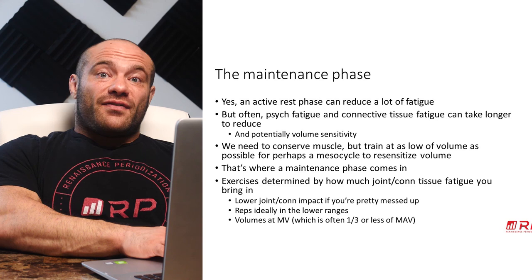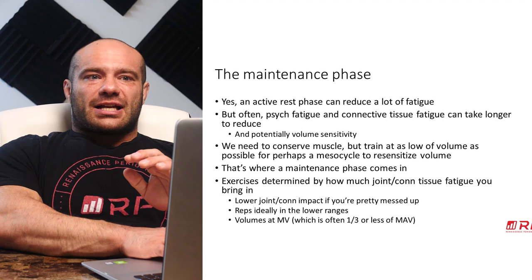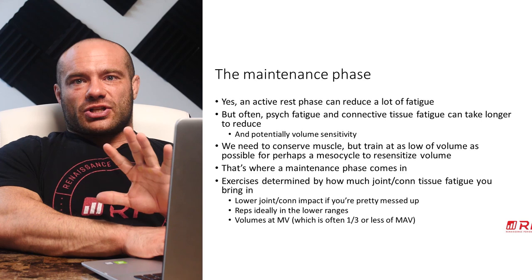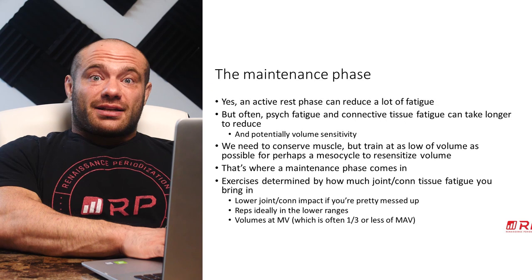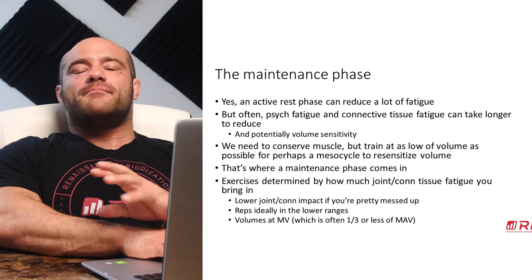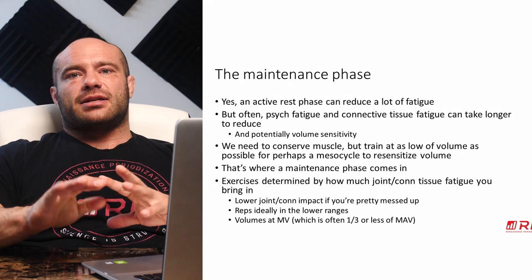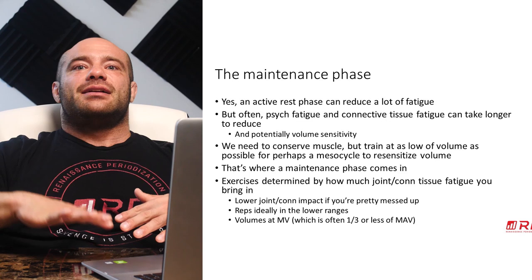Maintenance volumes are often about one-third of your maximum adaptive volume. For example, if in the first meso MEV was 10 and MRV was 20, the MAV average is roughly 15 sets per week. One-third of 15 is 5 working sets per muscle group per week. That means three sets of squats on Monday and two sets of leg press on Thursday — and that's it for a whole mesocycle. The bad news: you will grow zero muscle. The good news: you won't lose any muscle, your volume sensitivity comes way up, and connective tissue fatigue comes crashing down.